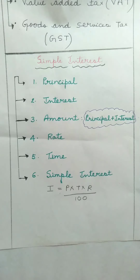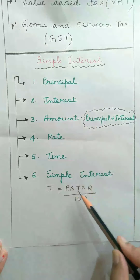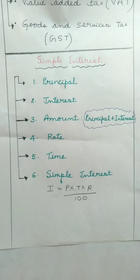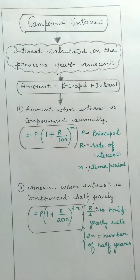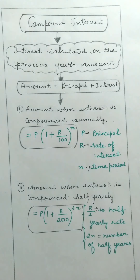The simple interest is calculated using the formula: I = PTR/100, where P is the principal, T is the time, and R is the rate of interest. When we calculate the interest based only on the principal amount, such interest is called simple interest. We have one more type called compound interest, where the interest is calculated on the previous year's amount. Let us consider an example to understand both.